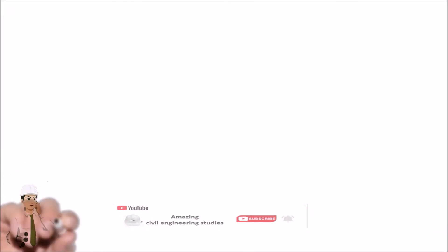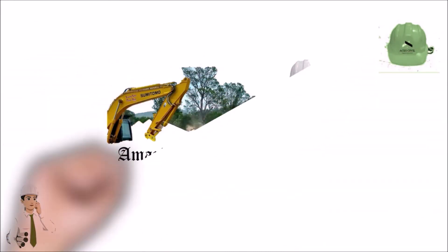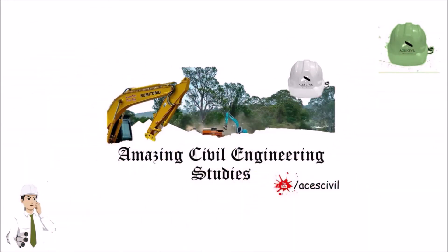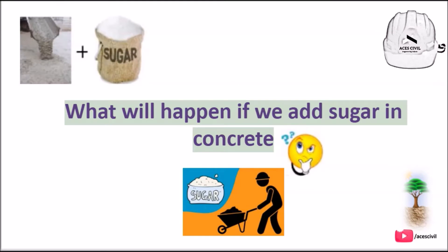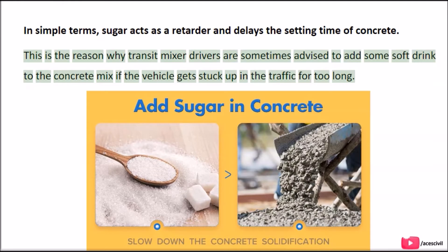Hello viewers, welcome to the channel Amazing Civil Engineering Studies. In today's video we are going to discuss about what will happen if we add sugar in concrete. In simple terms, sugar acts as a retarder and delays the setting time of concrete. This is the reason why transit mixer drivers are sometimes advised to add some soft drink to the concrete mix if the vehicle gets stuck up in the traffic for too long.